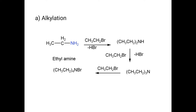We have taken the example of ethylamine. When ethylamine is treated with alkyl halide — bromoethane is the alkyl halide here — it undergoes a substitution reaction. HBr is removed and a secondary amine, diethylamine, is obtained. Diethylamine is more reactive than ethylamine, so it further reacts with bromoethane and again a substitution reaction occurs. HBr goes out and we get a tertiary amine, triethylamine. Triethylamine again reacts with bromoethane to give a quaternary ammonium salt.